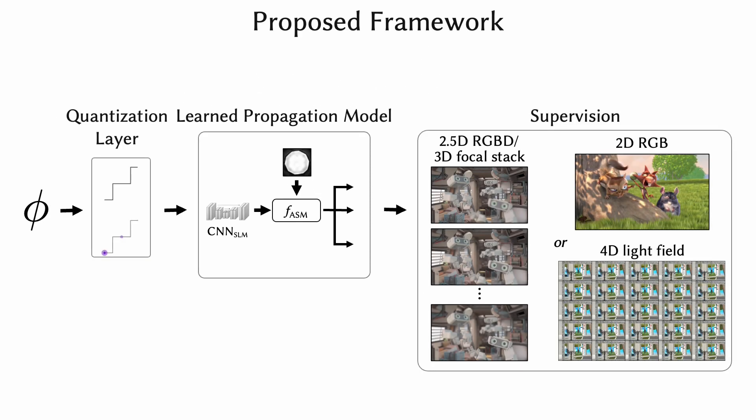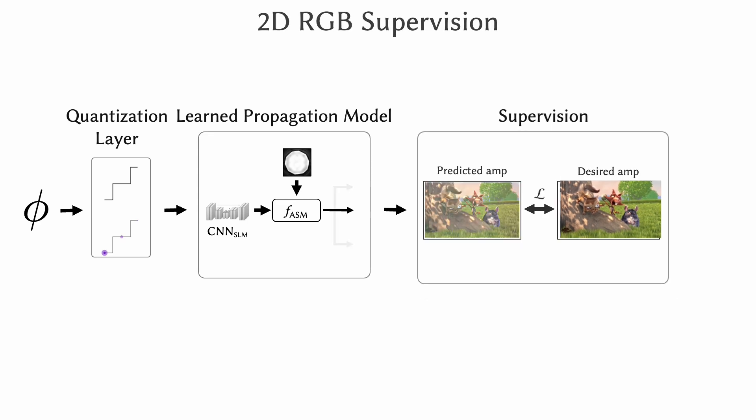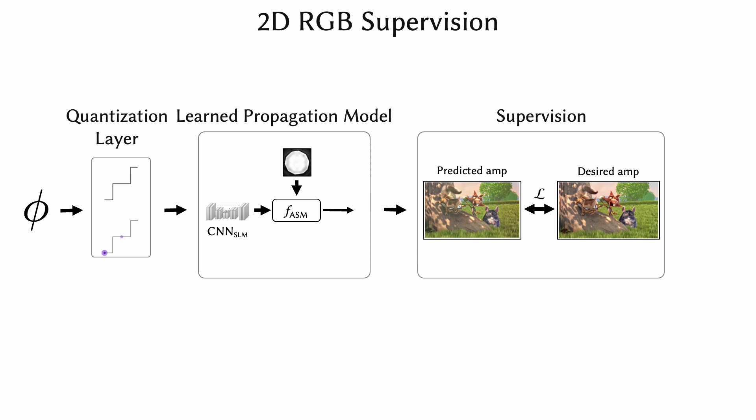With the quantization layer and learned propagation model, we can now synthesize high-quality phase patterns for a variety of supervision types. Firstly, by supervising the time average intensity at a particular target plane, we can produce high-quality 2D holograms.